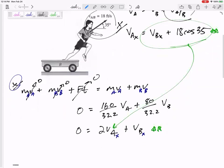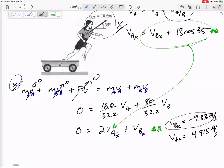So I would get vb in the x is negative 9.83 feet per second, va in the x is 4.915 feet per second. Does that kind of make sense that b would be going backward in the negative x direction? And so that is the answer to part b. I answered part b before I answered part a.